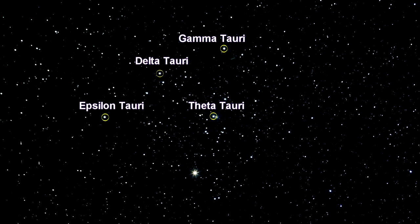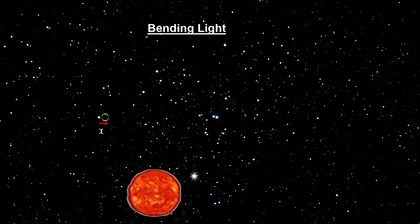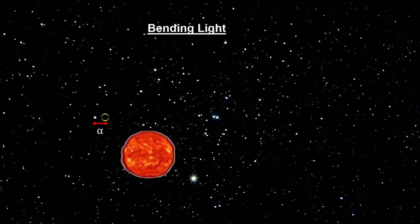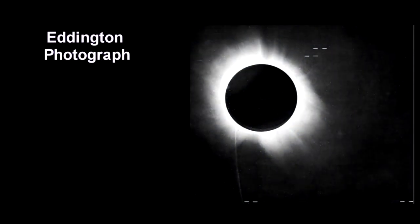Here's the Hyades star configuration with some of the brightest stars identified. The British astrophysicist Arthur Eddington took up positions off the coast of Africa and Brazil, and simultaneously measured the cluster's light as it brushed past the Sun.